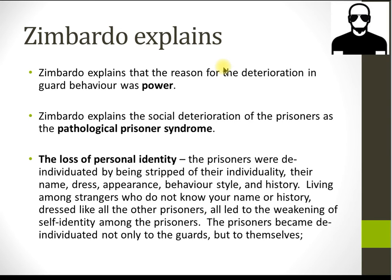Zimbardo explains the outcome by saying that the deterioration in guard behavior was due to power — power corrupts, and in this case corrupted absolutely. He explains the social deterioration of the prisoners as what's sometimes referred to in the literature as pathological prisoner syndrome. This was a result of things like loss of personal identity — they were told to wear smocks and were called by their numbers.